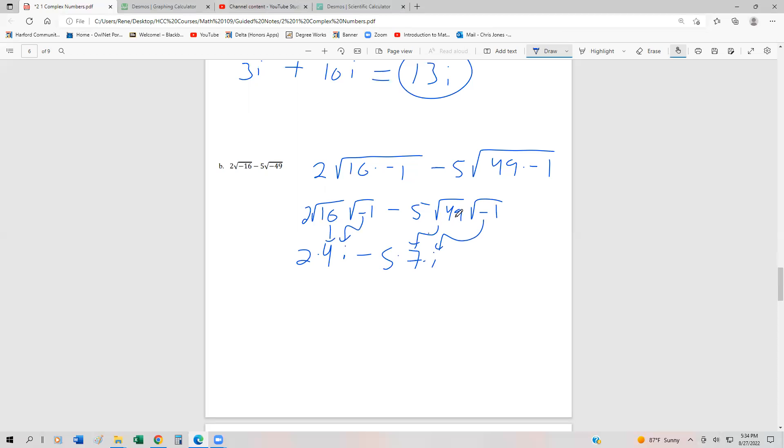And so we end up with 8i minus 35i. So 8 minus 35 is going to be negative 27i. So that one wasn't so bad. That's how we just go through and try to simplify this.